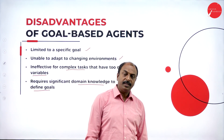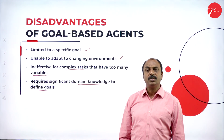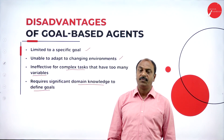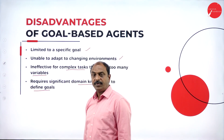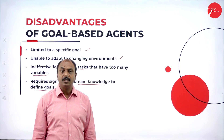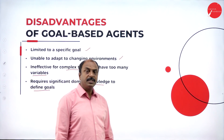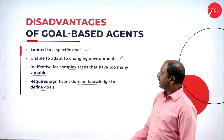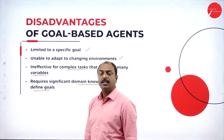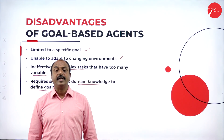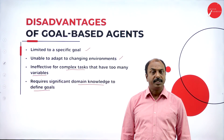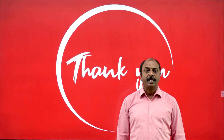In this session, we have covered two types of agents. One is model based reflex agent, which takes decisions based on predefined models available with the agent. The other is goal based agent, which works based on percepts from the environment and takes decisions to reach a specific goal. We will continue our discussion in the next session. Thank you so much.